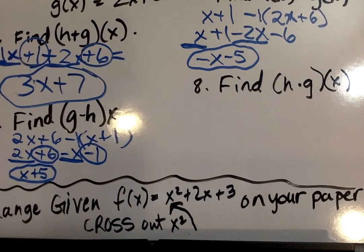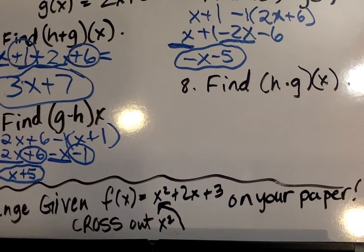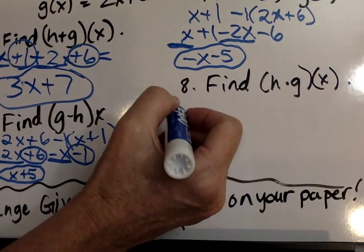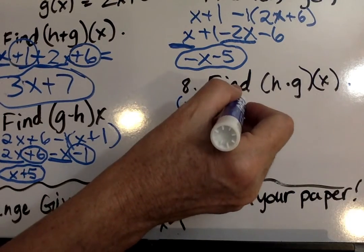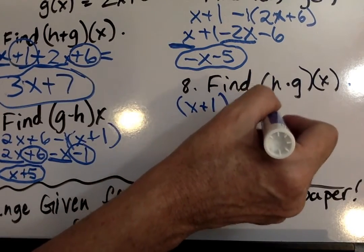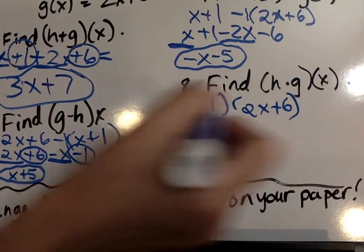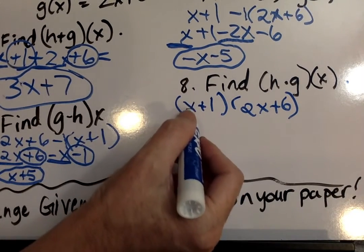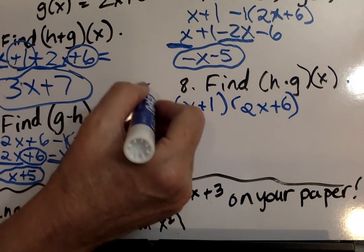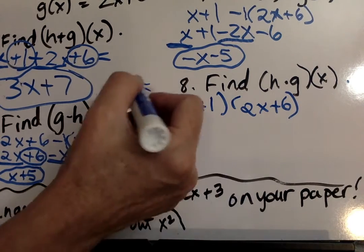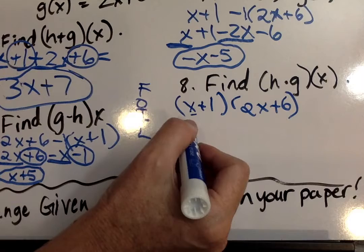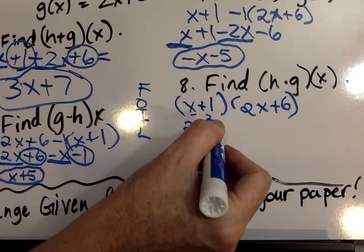Next it says let's find h times g of x. So this is when we can either do foil or we can draw the boxes. I'm going to go ahead and do foil. So I write h of x, x plus 1. And the other one is 2x plus 6. So I'm going to go first one because it's foil, remember? First, outside, inside, last. So just a quick review on foil. The f stands for first, x times 2x is 2x squared.